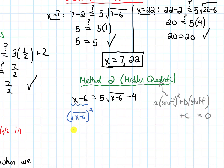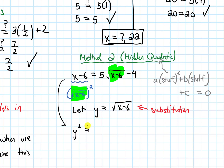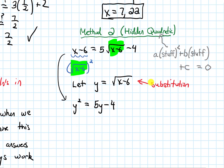Seeing that, what I'm going to do is substitute. I'll pick a new variable — I'll call it y — and let y be the thing I see in more than one spot: y equals the square root of x minus 6. When I substitute, the left-hand side becomes y squared, and the right-hand side becomes 5y minus 4. Notice that my equation has now become a quadratic — that's the whole goal of this substitution.